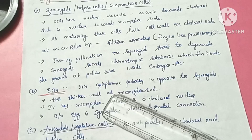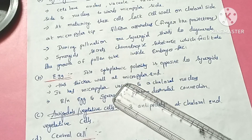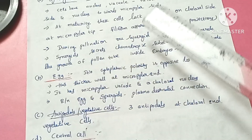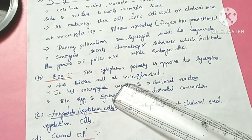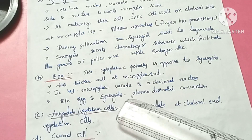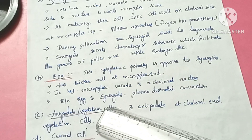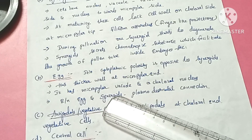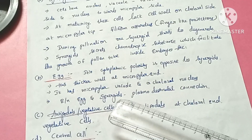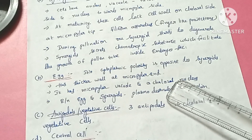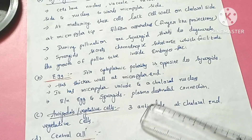Next is the egg cell. At the micropylar end, there are three cells: two synergids and one egg, forming the egg apparatus. The egg cell shows cytoplasmic polarity opposite to the synergids — its vacuole is present towards the micropylar end and its nucleus is towards the chalazal side. So the egg has a micropylar vacuole and a chalazal nucleus.